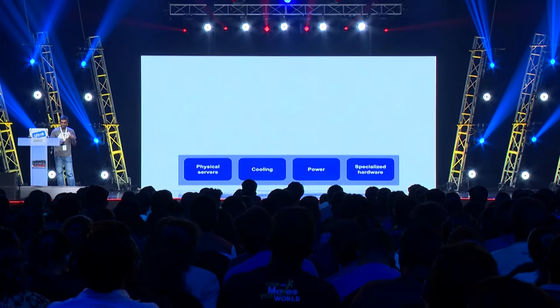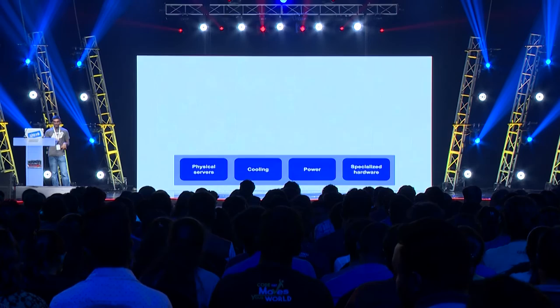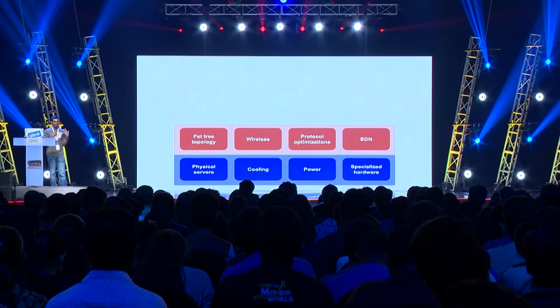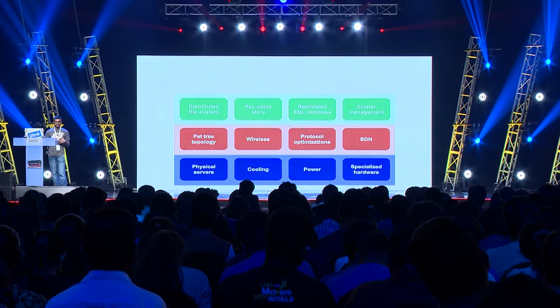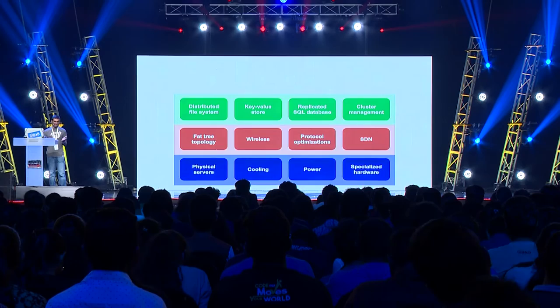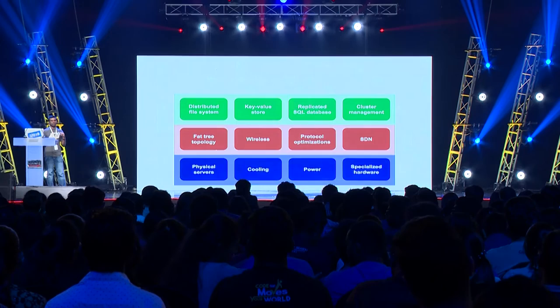So that was a metric ton of information — let me condense it to a single picture. We started with data center hardware: unreliable servers, cooling and power requirements, and specialized hardware like TPUs. Then we looked at the data center network stack: fat-tree topology, wireless bandwidth augmentation, Data Center TCP, and B4, Google's global SDN. Then we looked at critical software systems: GFS, Bigtable, Spanner, and Borg. This is not a complete picture, but it's a decent representation of what it takes to build and operate a cloud platform at planetary scale.